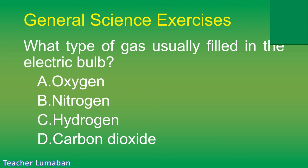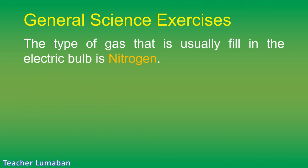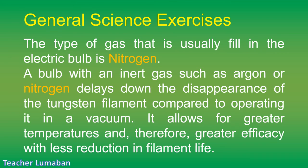The correct answer is Letter B: nitrogen. The type of gas usually filled in the electric bulb is nitrogen. A bulb with an inert gas such as argon or nitrogen slows down the disappearance of the tungsten filament compared to operating it in a vacuum. It allows for greater temperatures and therefore greater efficacy with less reduction in filament life.